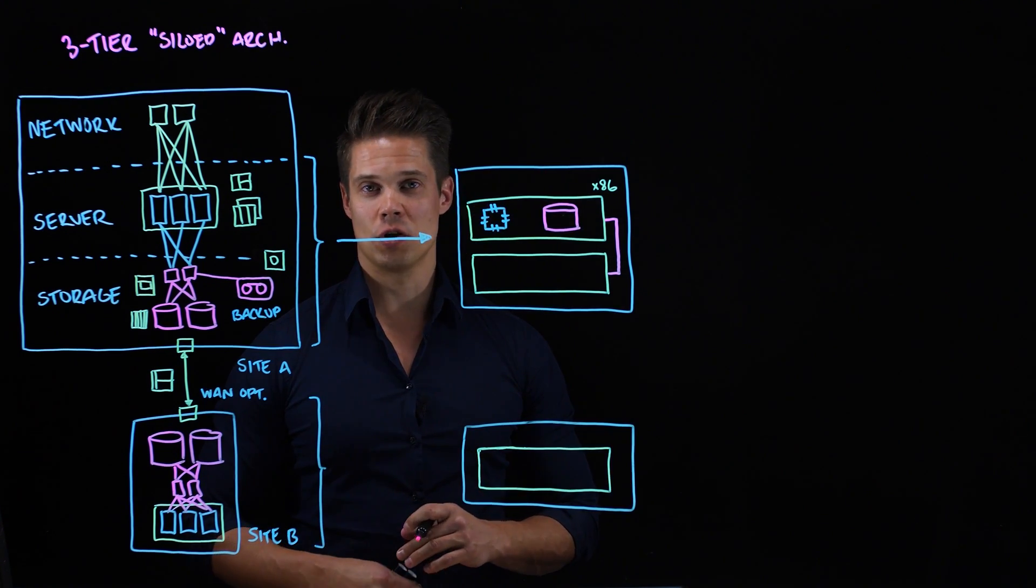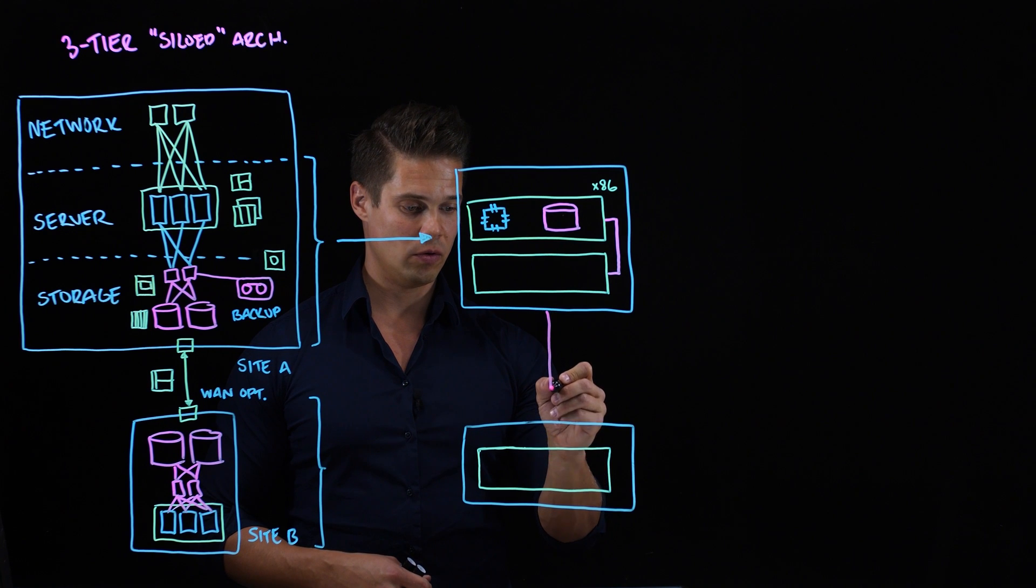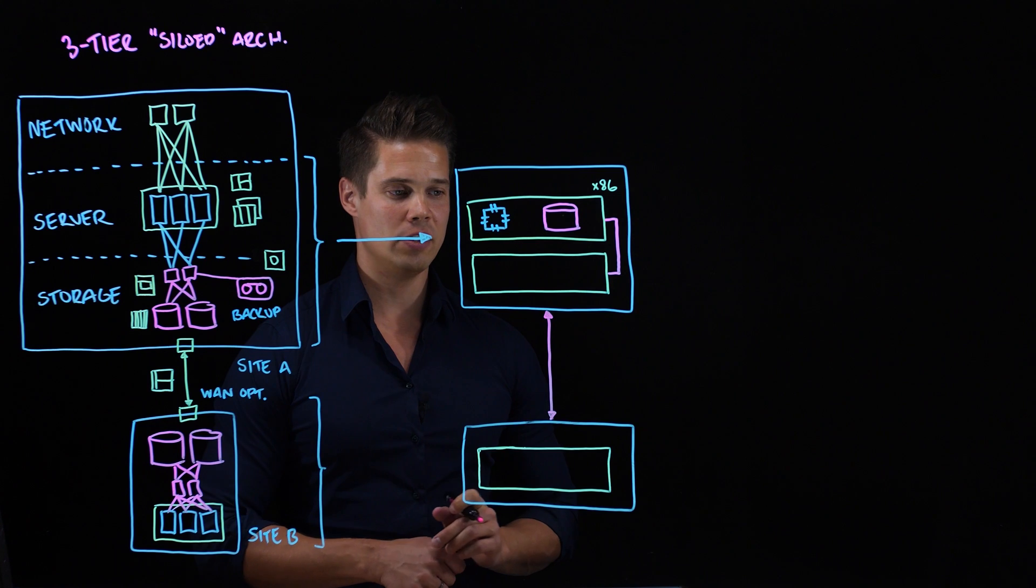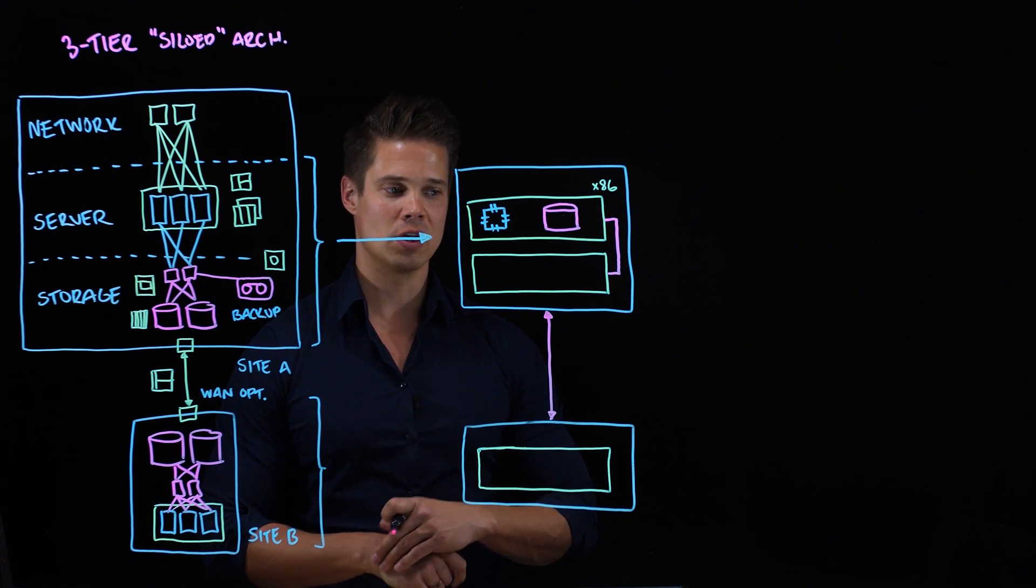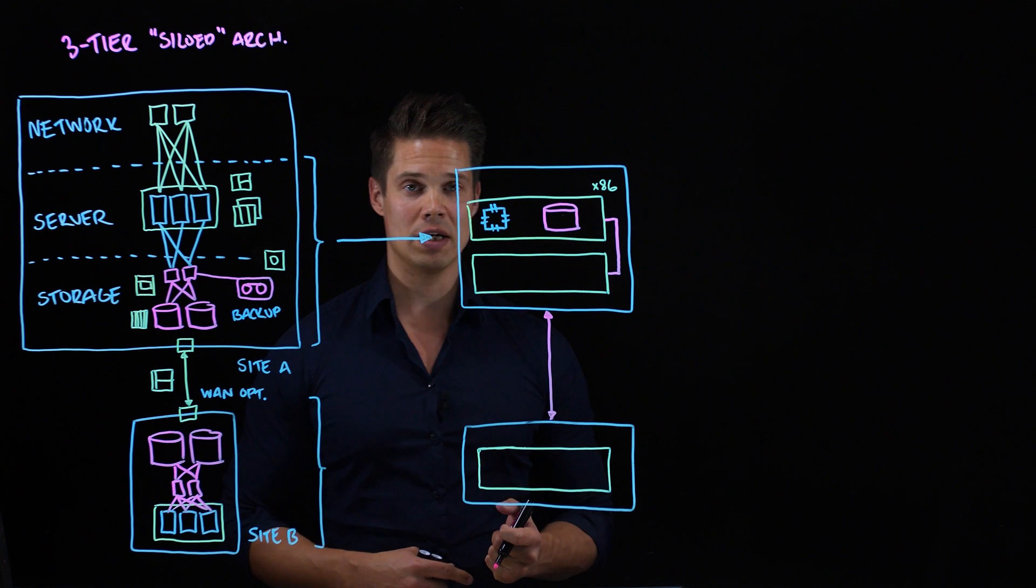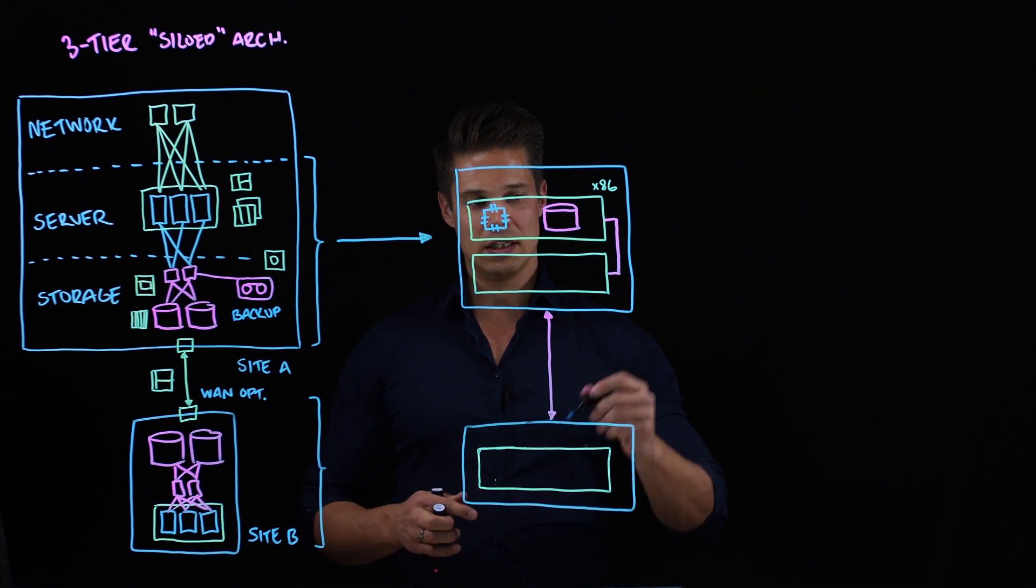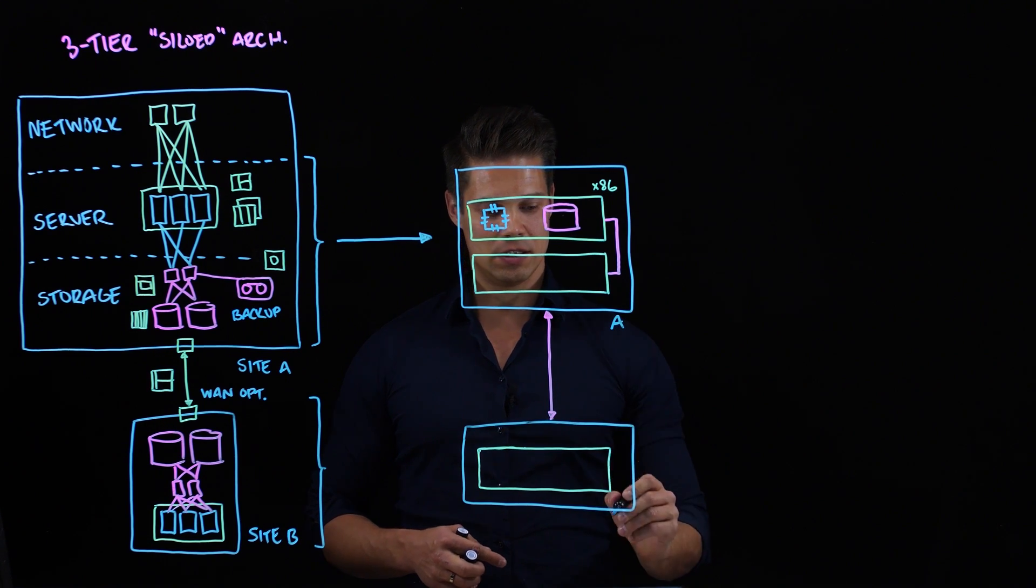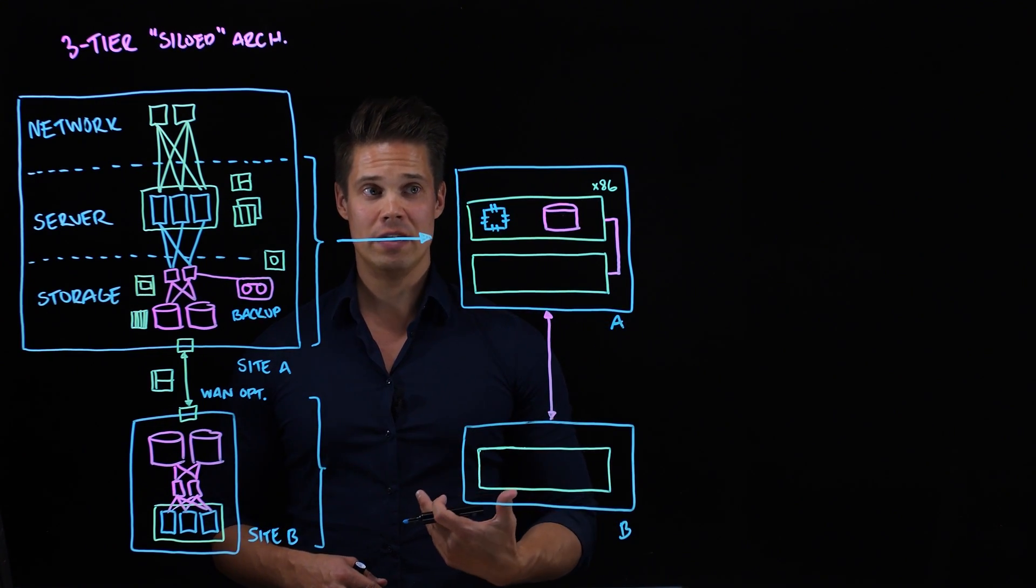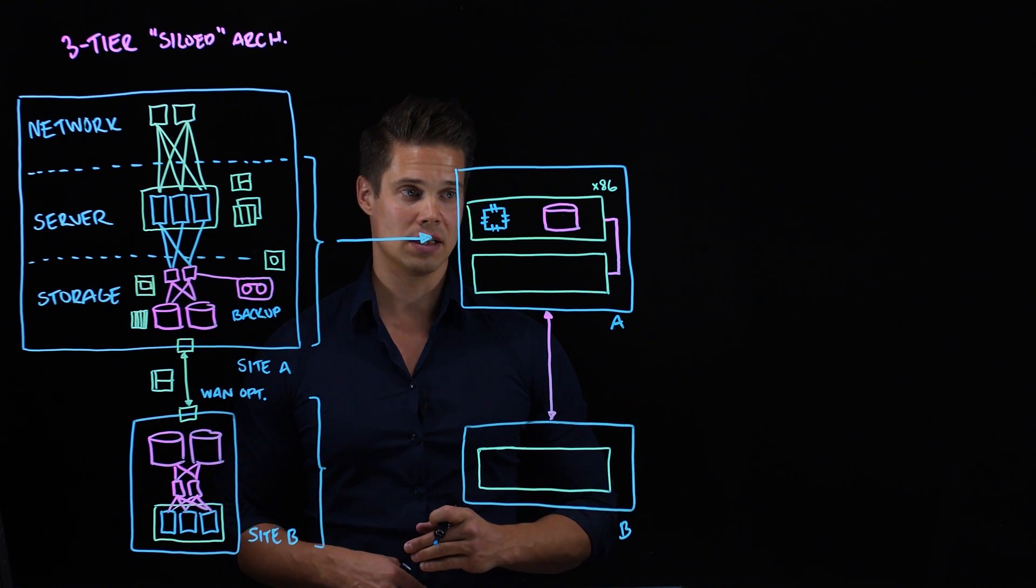And the best hyperconversion solutions out there nowadays are directly communicating with sites without the need of any special WAN optimization or anything. They use sophisticated file systems to make sure that all the data is compressed and optimized so that they can be sent over vast distances. This was our site A and this is now our site B.